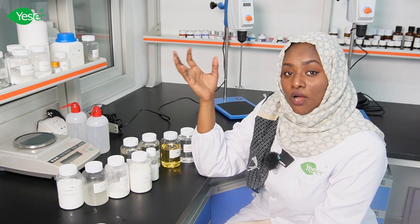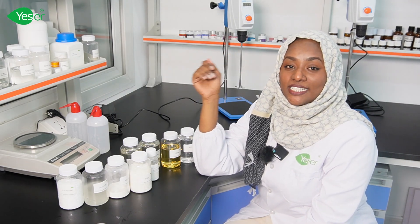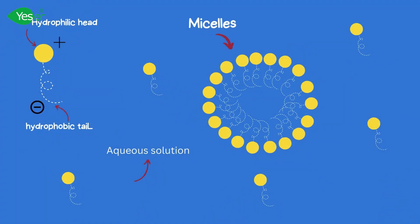You have to know how to mix surfactants together to reach your goal. Surfactants form micelles when they reach a certain concentration known as the Critical Micelle Concentration, or CMC. They have two parts: a head and a tail. The head is hydrophilic and the tail is hydrophobic.